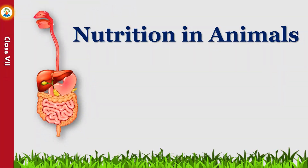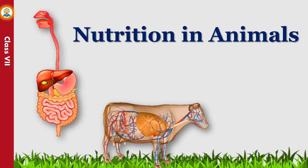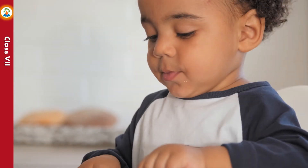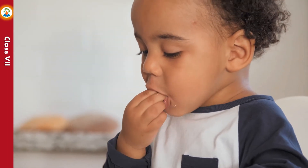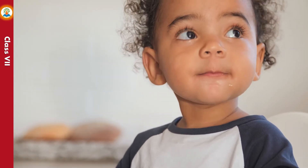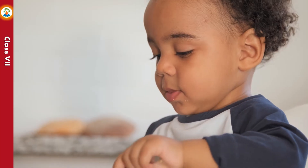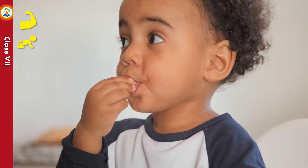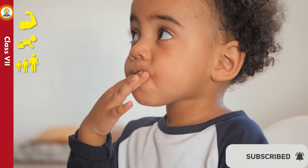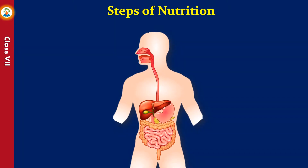Hello friends, in this video we will learn an interesting topic of science: nutrition in animals, steps involved during nutrition, nutrition in ruminants, and the nutrition process in amoeba. The food we consume is used by our body for various activities. Nutrition in animals includes the intake of food from external sources and the utilization of nutrients present in the food for energy, growth, and development. In animals, nutrition is carried out in five steps.